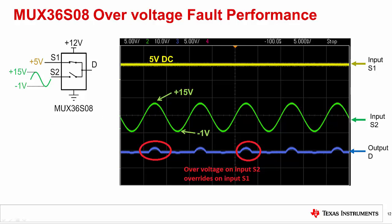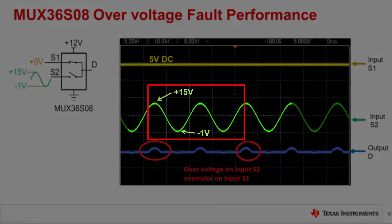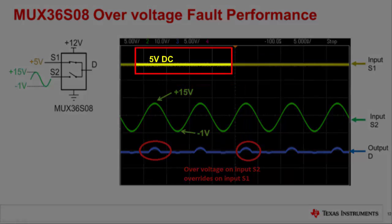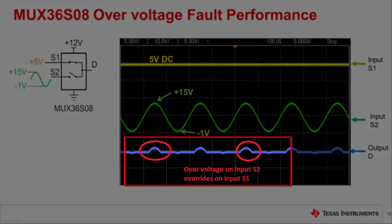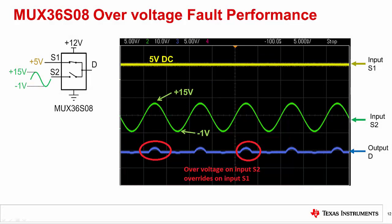This slide highlights the MUX36SO8 performance when channel S1 is on and an overvoltage condition occurs on channel S2. The overvoltage signal applied to the off channel is a sinusoidal 16 volt peak-to-peak signal offset by 7 volts, ranging from negative 1 volt to positive 15 volts. The on channel has a 5 volt DC input signal, so the output should be 5 volt DC. Notice that when the overvoltage condition occurs on the off channel, the output follows that signal — the overvoltage feeds through to the output. This is an undesirable effect that not only corrupts the output signal but could also damage the circuit interfaced to the output.